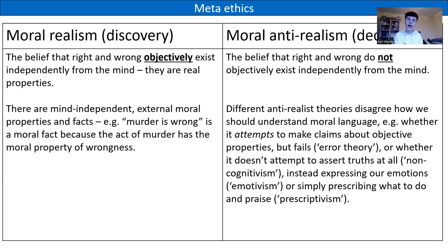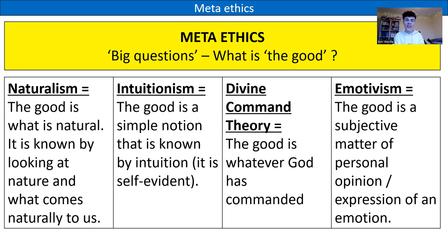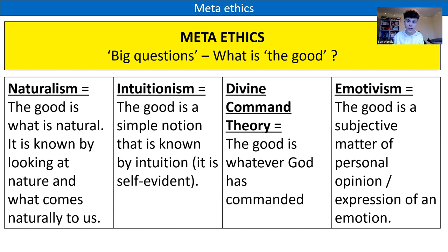Meta-ethics is a really fascinating area that gets us asking a lot of questions. It makes us think about the theories we've already discussed and what their foundations are. Meta-ethics asks the big question: what is the good? Naturalism says the good is what is natural, known by looking at nature. Intuitionism says the good is a simple notion known by intuition — self-evident. Divine command theory says the good is whatever God has commanded, which leads to the Euthyphro dilemma. Emotivism says the good is a subjective matter of personal opinion — an expression of an emotion.